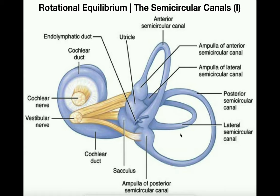It's important to note there are three. The first is called the anterior or superior semicircular canal. Then we have the lateral semicircular canal, and then the posterior semicircular canal. These three semicircular canals detect changes in rotational equilibrium in one of three planes: the transverse plane, the coronal or frontal plane, and the sagittal plane.